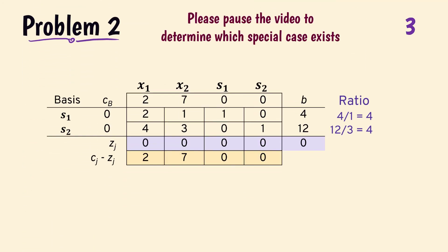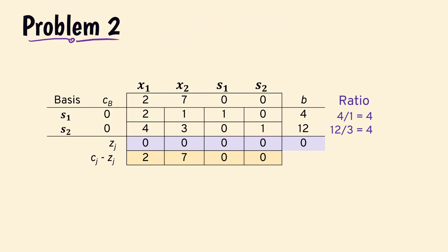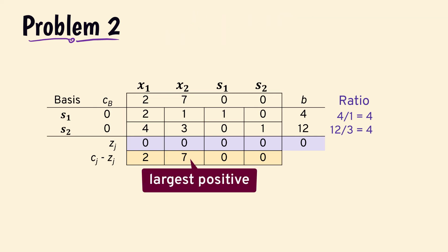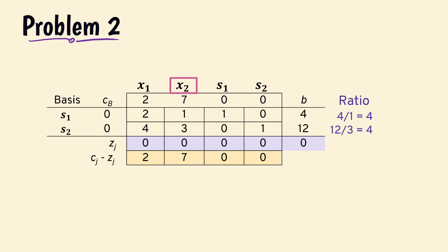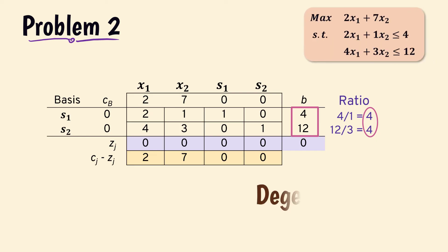Problem 2. Here we do not have the final tableau as x2 should enter the basis next. But if we try to determine the variable leaving the basis, we find that the ratios are tied, which indicates we will have a degenerate solution in the next iteration. Therefore, the condition here is degeneracy.